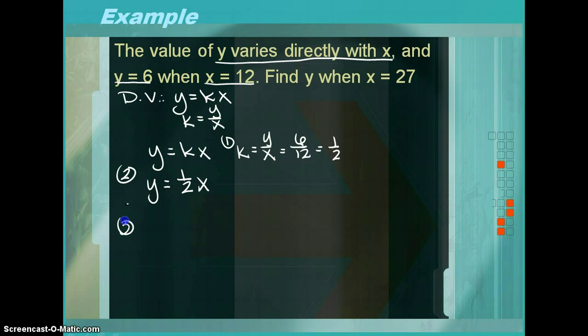So, again, the third step is to plug in the x to find your y. So, y is equal to 1 half times 27. So, y is equal to 27 halves. Or, that's the same thing as saying 13.5. Therefore, y is equal to 13.5 when x is equal to 27.